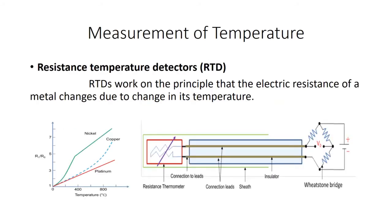We will go to the measurement of temperature. What are the devices used for measurement of temperature? We have done experiments with the help of RTD — RTD is nothing but Resistance Temperature Detector. The principle of operation: if a material is being heated up, the resistance of the material will be increased. That is the operating principle of the RTD.